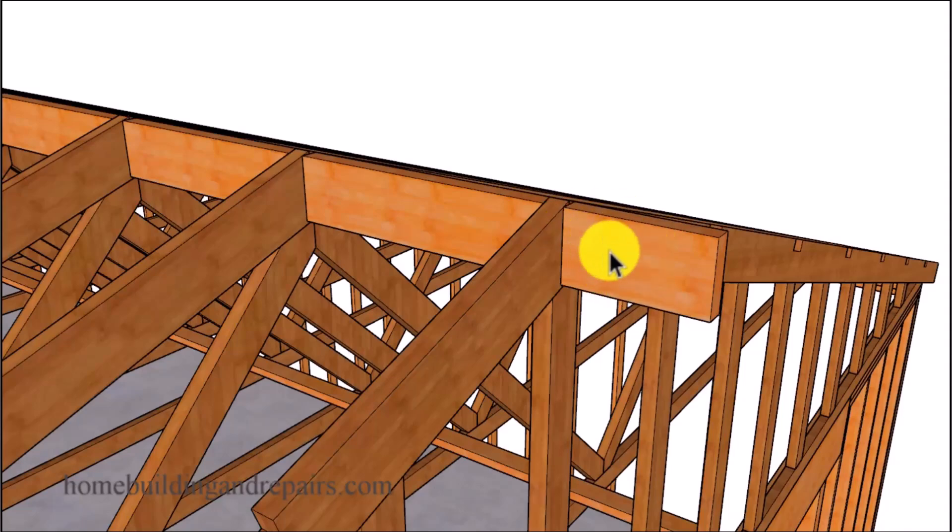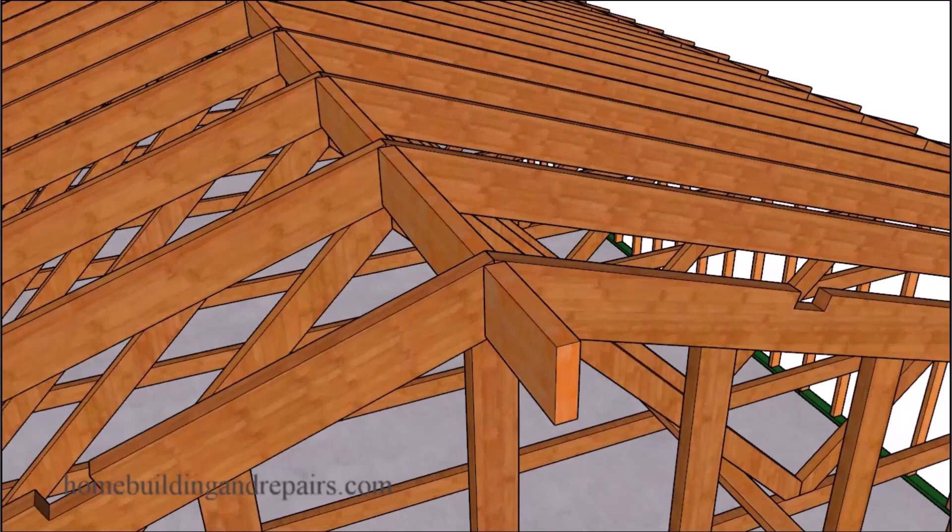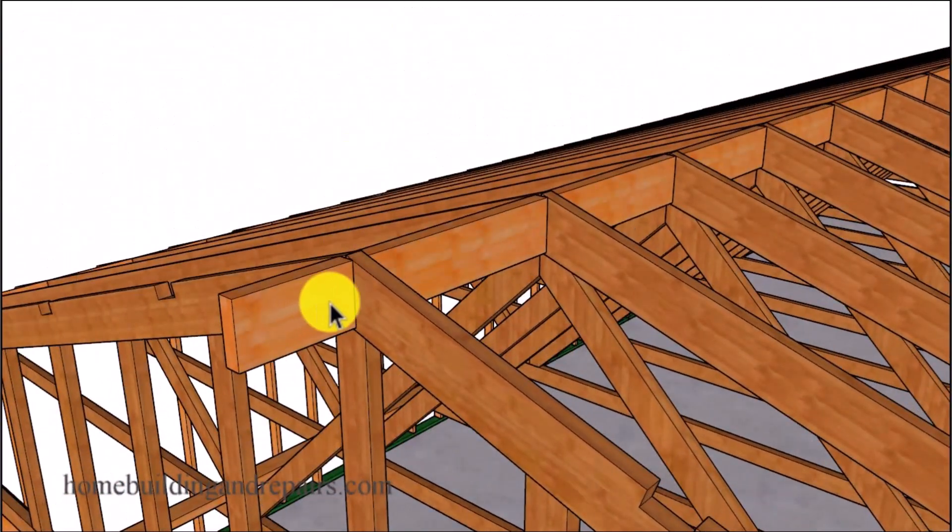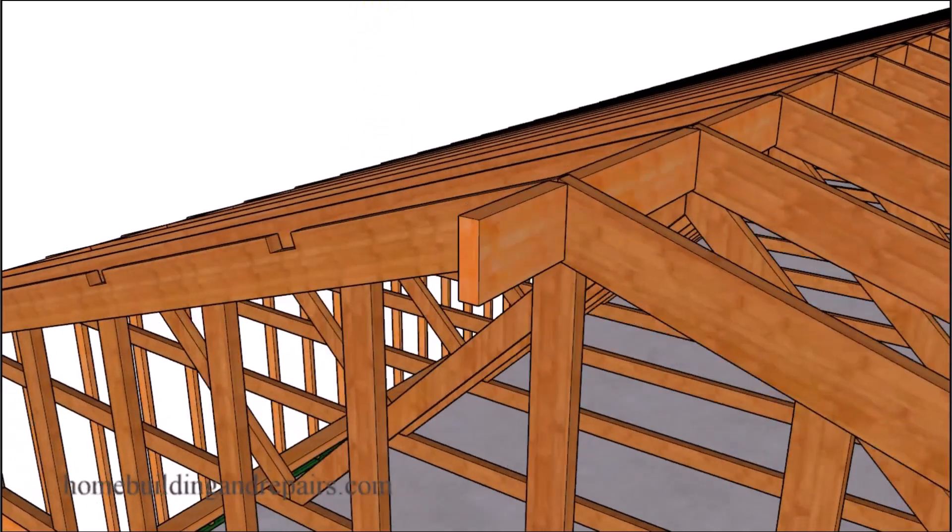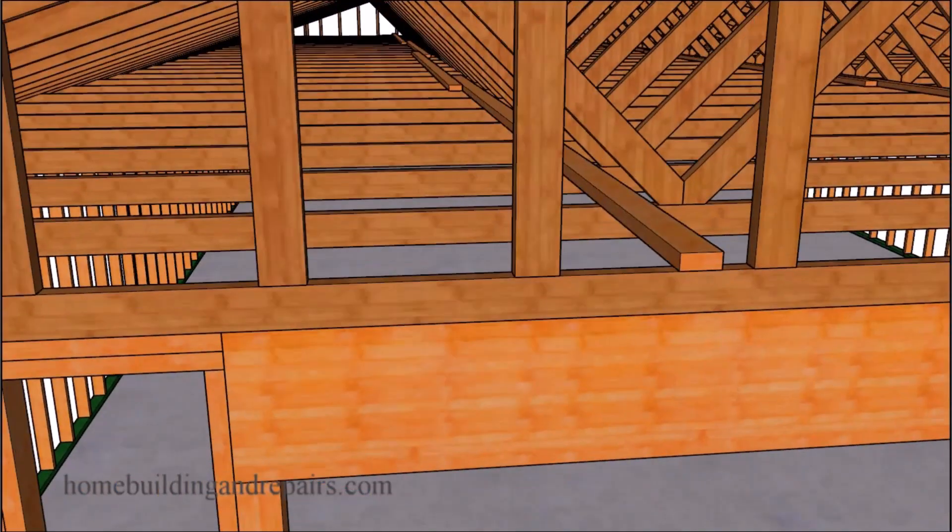And our eave blocks here. And our block here for the fascia board. And basically the lookouts are going to provide us with enough structural support because this block will not be providing us with much. And this is another common method for framing with roof trusses.